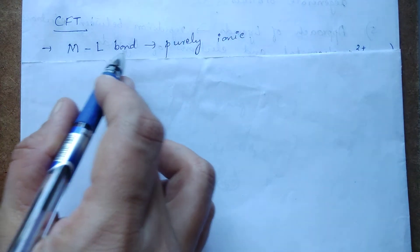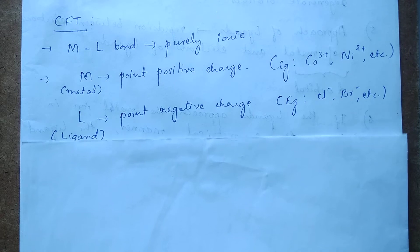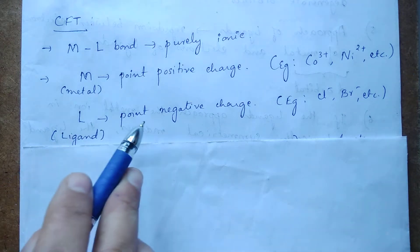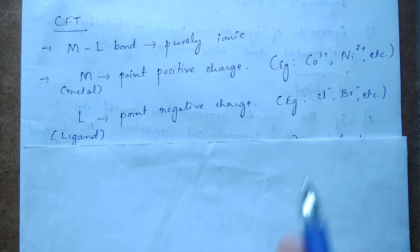According to crystal field theory, the metal-ligand bond is considered to be purely ionic in nature. As you know, an ionic bond is the force of attraction between positive and negative charges. In coordination complexes, the metal is considered as a point positive charge — for example, cobalt ion or nickel ion. Similarly, ligands are considered as point negative charges, for example chloride or bromide, which act as ligands.